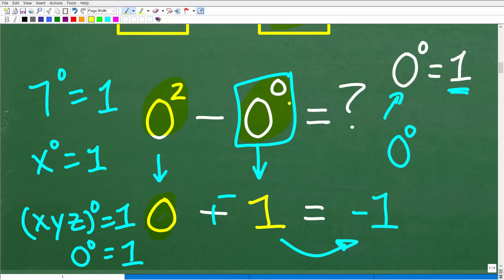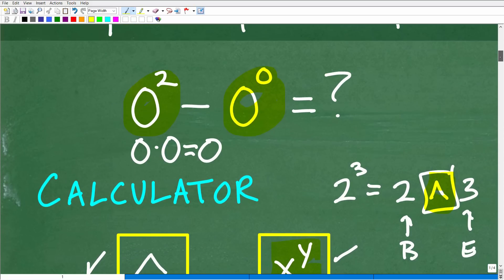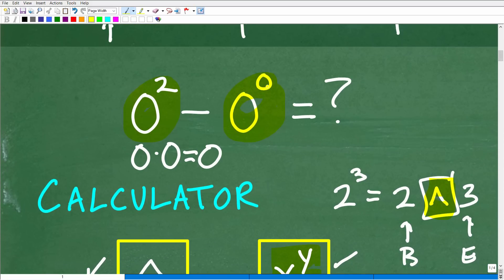But, again, if you are astute enough to know that, oh, 0 to the 0 power, that's undefined. So you have 0 minus undefined. Well, that whole thing doesn't make sense. That is correct as well, OK? So a little kind of a tricky situation with the power of 0 or 0 to the 0 power.